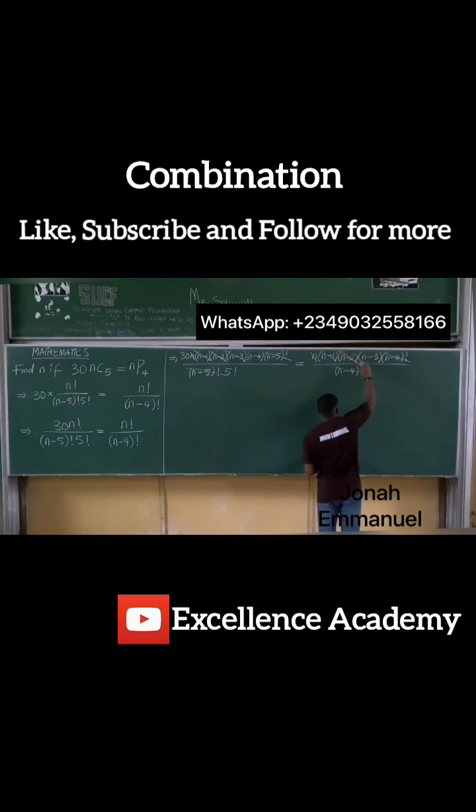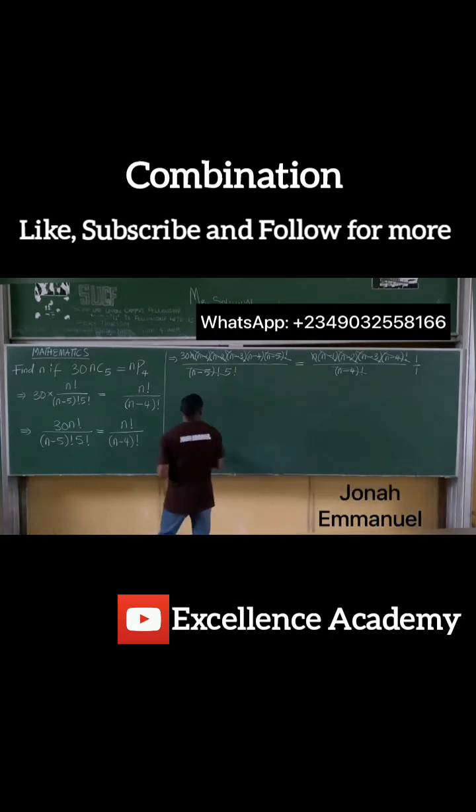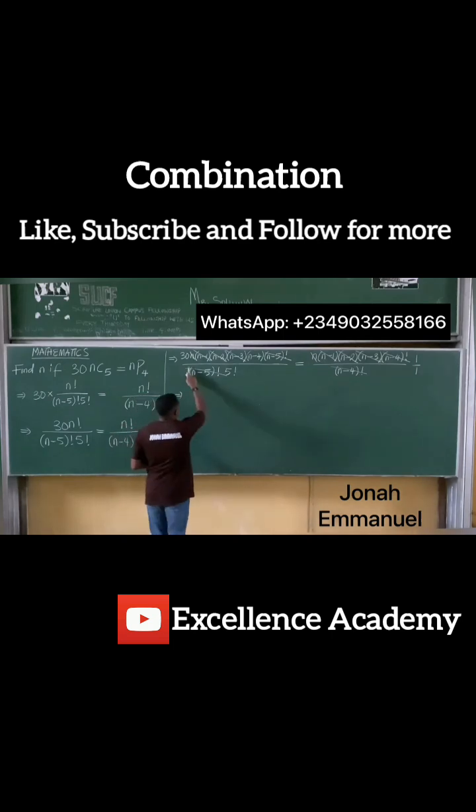So what's left here is 1 all over 1 after all cancellations. This is now equal to—I'm left with 30 into this one here, n minus 4.